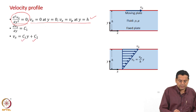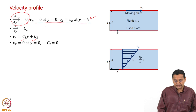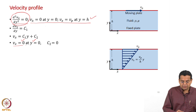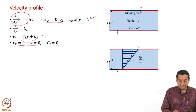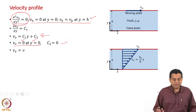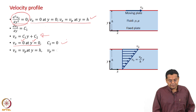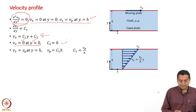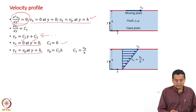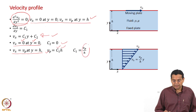Now we will have to evaluate the constants c₁ and c₂, for which we use the boundary conditions. Using the first boundary condition, vx equal to 0 at y equal to 0: substituting into the equation, we get c₂ equal to 0. Now let us use the other boundary condition: vx equal to vp at y equal to h. Substituting into the equation, with c₂ equal to 0, the left-hand side is vp and the right-hand side is c₁ times h. So c₁ becomes vp/h.